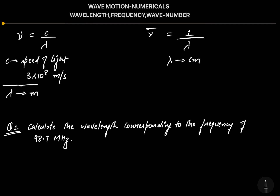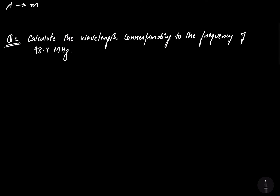Now let's solve the first numerical. The question says: calculate the wavelength corresponding to the frequency of 98.7 megahertz. Frequency is the number of waves formed in one second, so its unit is per second, which has another name called hertz.